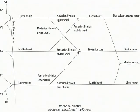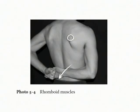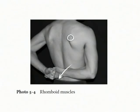Then show the dorsal scapular nerve originates from C5. It innervates the rhomboid muscles, which pull the scapula in the opposite direction of serratus anterior, toward midline and downward. Injury to either of these muscles or the trapezius muscle, which cranial nerve 11 innervates, results in scapular winging.